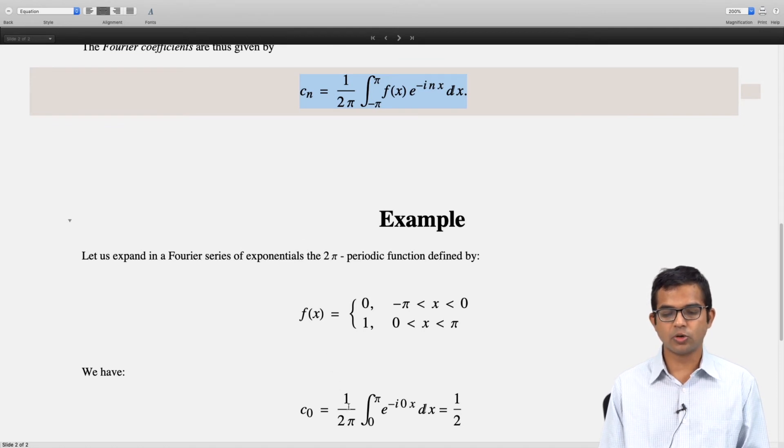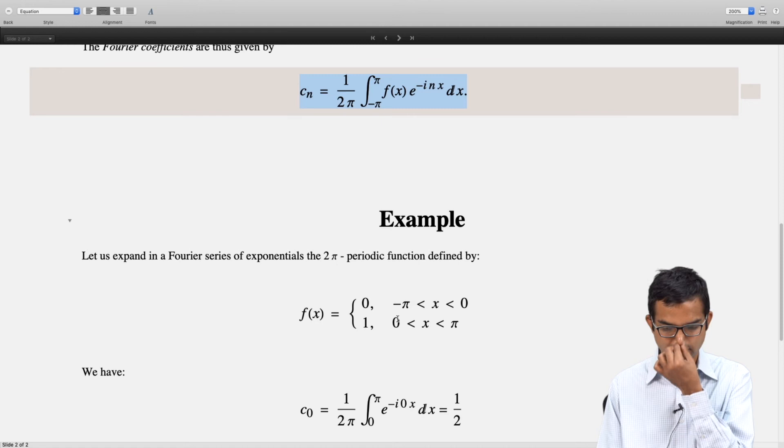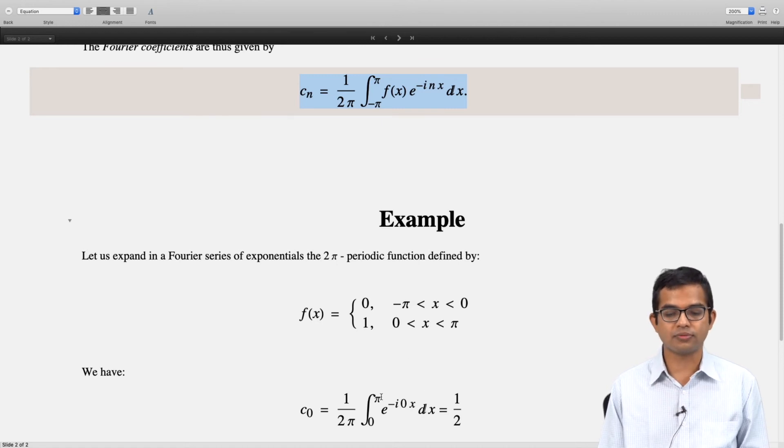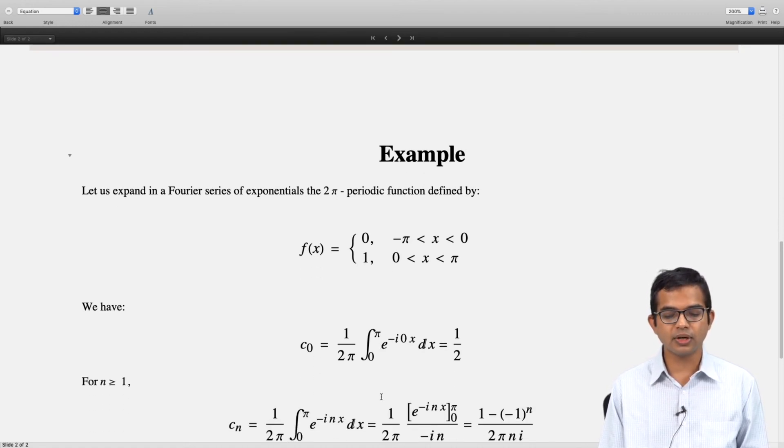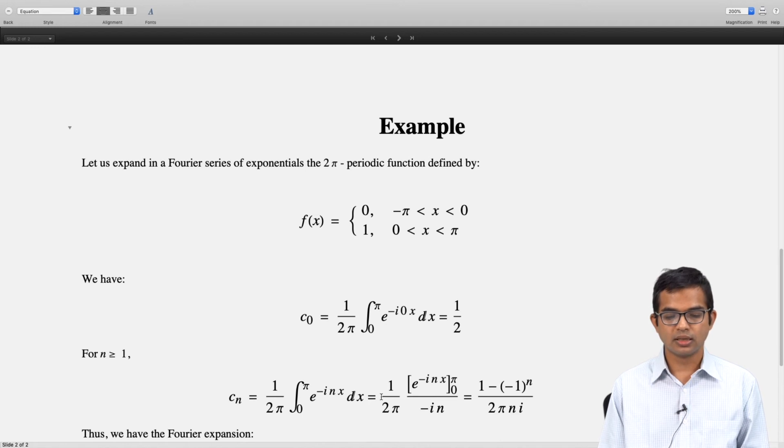It is easy to slip in this evaluation of these coefficients if you do not make a distinction for c₀. So c₀ is 1/(2π) times just 1 in the interval 0 to π. The other interval does not matter, -π to 0, because you have 0 there for the function, so you just get a half for c₀.